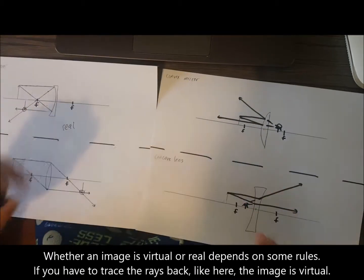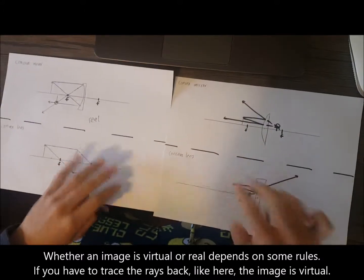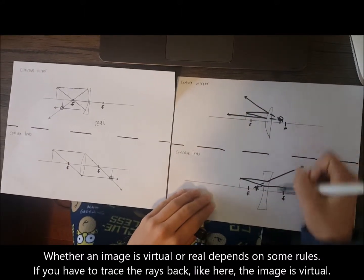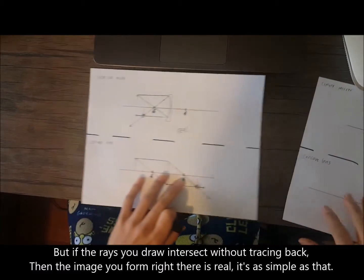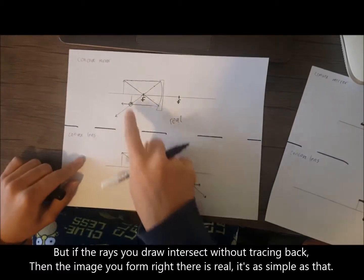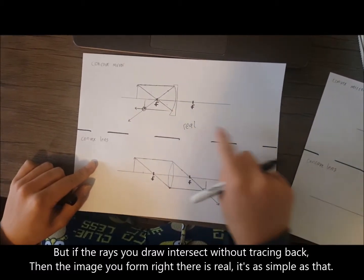Whether an image is virtual or real depends on some rules. If you have to trace the rays back like here, the image is virtual. But if the rays you draw intersect without tracing back, then the image you form right there is real, it's as simple as that.